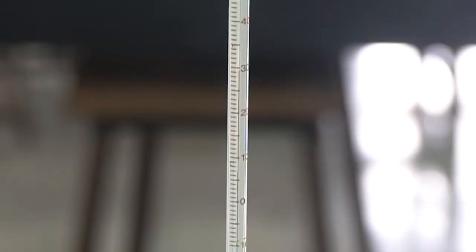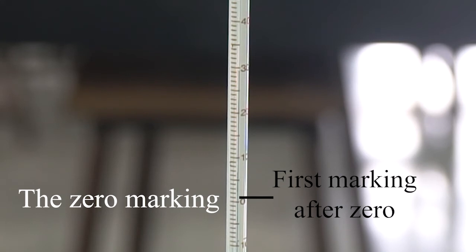Now we'll take a closer look at the thermometer to find its least count. First we need to find the zero marking, then the next numbered marking. There are 10 divisions between zero and the next marking which is 10, hence the least count is 1 degree Celsius.